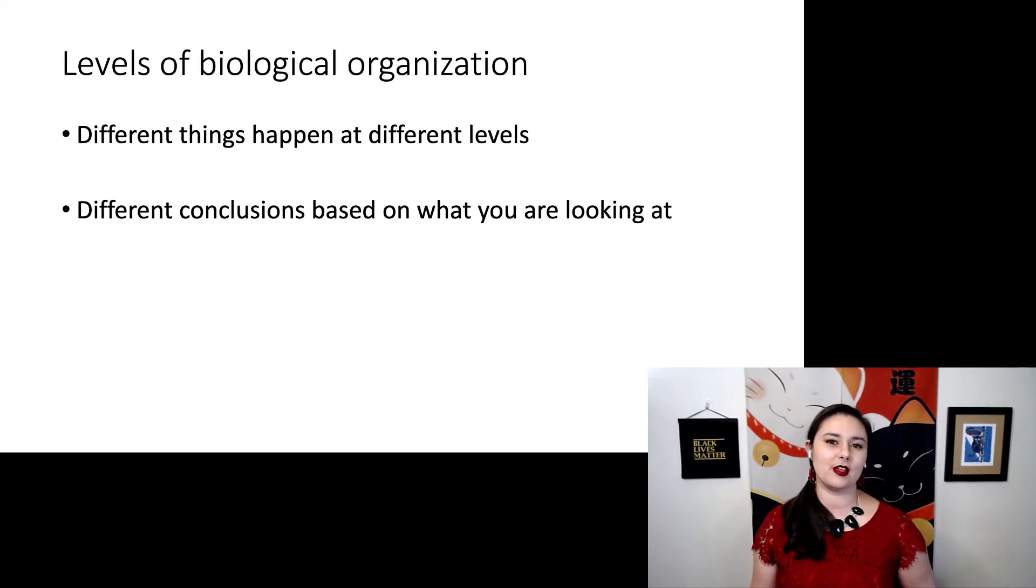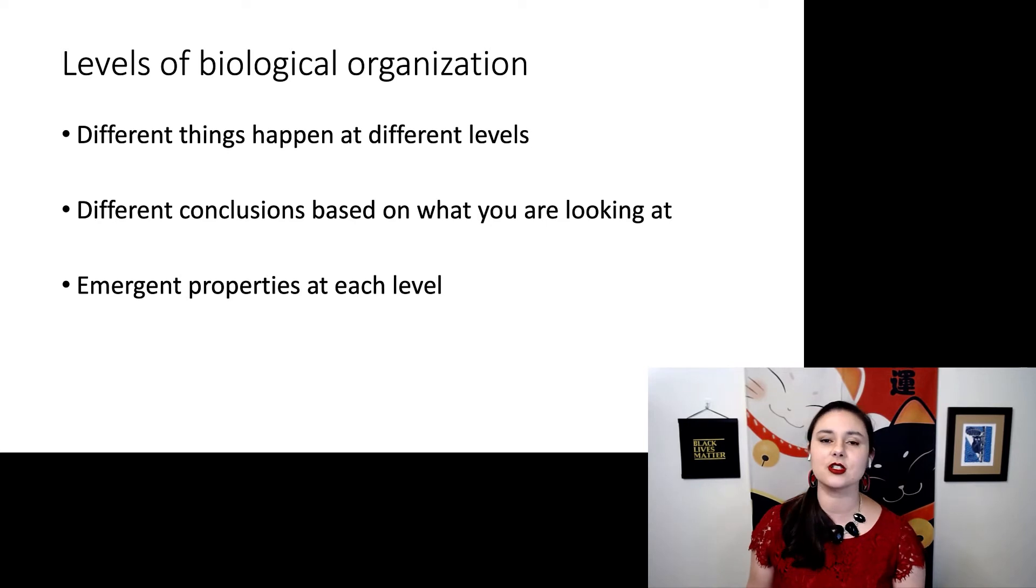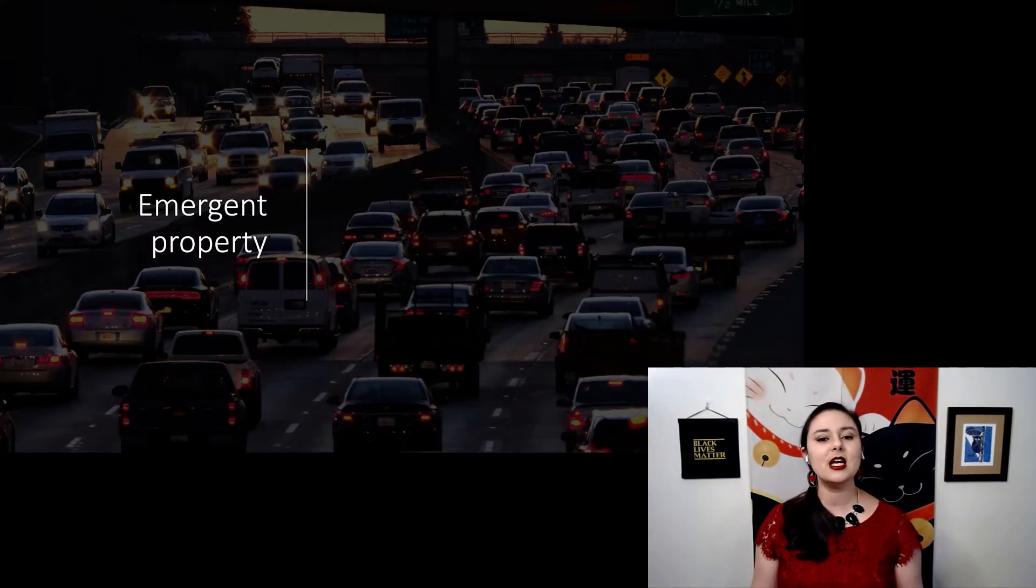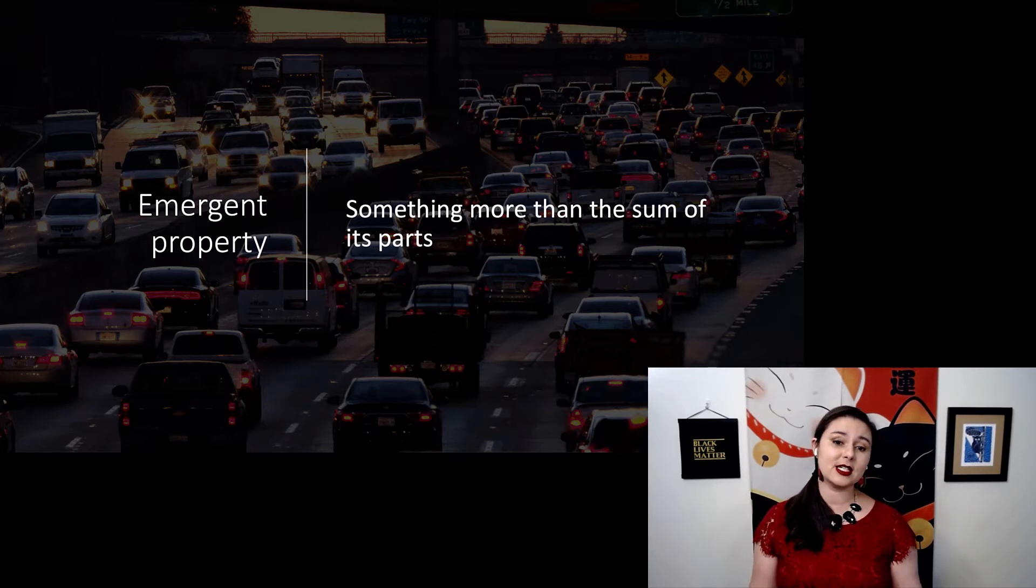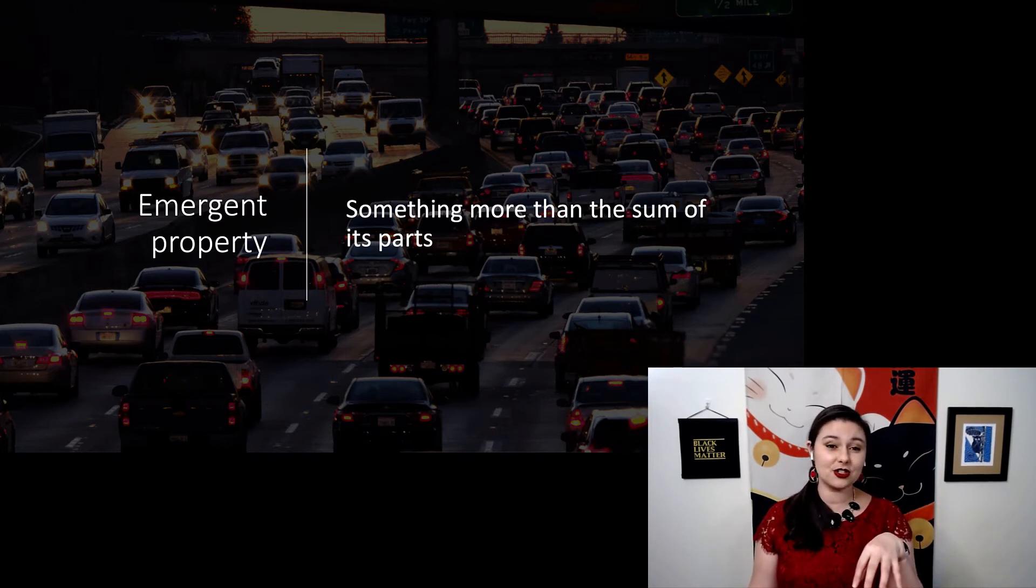But another important thing is emergent properties. At each different level of biological organization, there's a different emergent property going on. And that's why you will see different things at different levels. An emergent property is simply something that is more than the sum of its parts. One good example is traffic patterns. You cannot predict the overall pattern of traffic by simply looking at the decisions of one person. You have to look at everyone's decisions. And that's how a traffic pattern emerges.